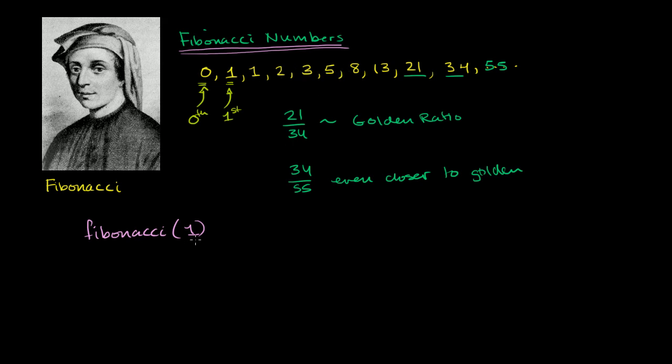And so fibonacci of 1, the first term, will be this right over here. It should return 1. Fibonacci of 0 should return 0. Fibonacci of 3 should return 0, 1, 2, 3. It should return 2.